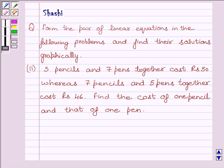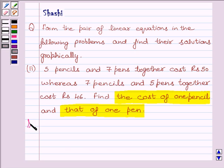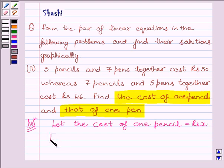We can see in the question that we have 2 unknown quantities that is the cost of 1 pencil and the cost of 1 pen. Let us start with the solution. Let the cost of 1 pencil be rupees X and the cost of 1 pen be rupees Y.